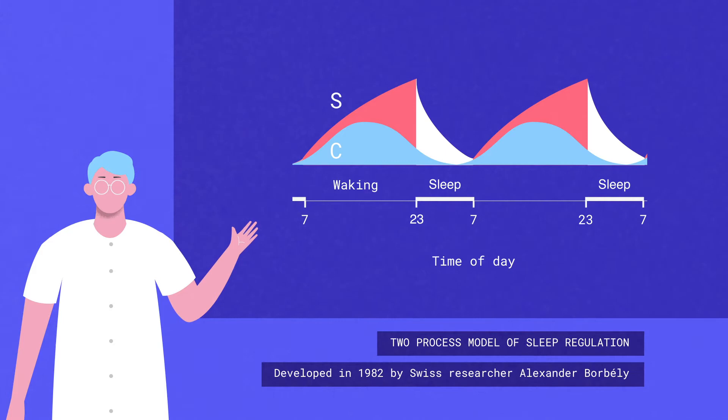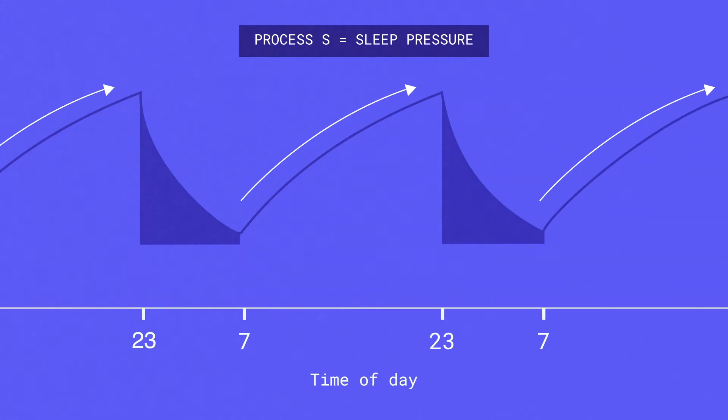According to this model, two processes regulate our sleep-wake pattern. The first process, called process S, refers to the build-up of sleep pressure. This pressure to sleep builds up during wakefulness and then decreases as we sleep.